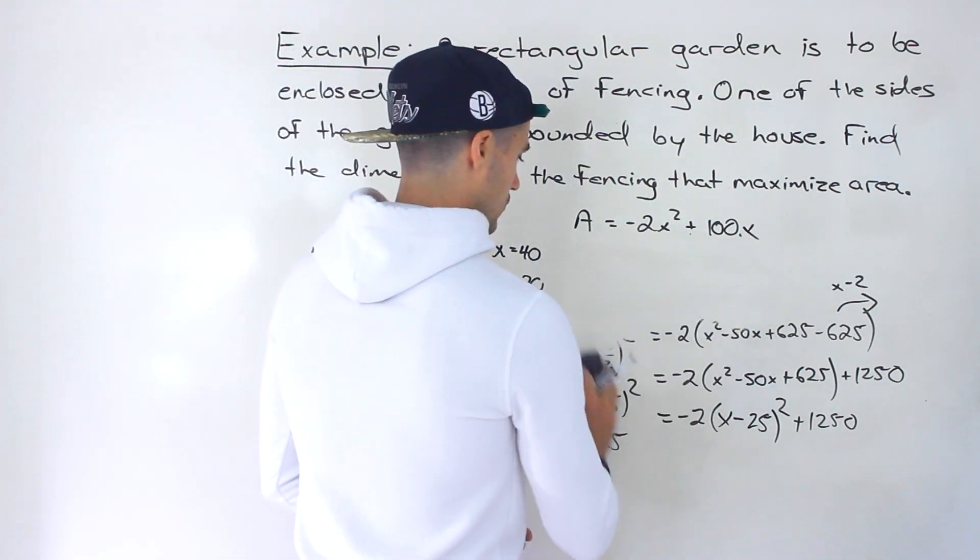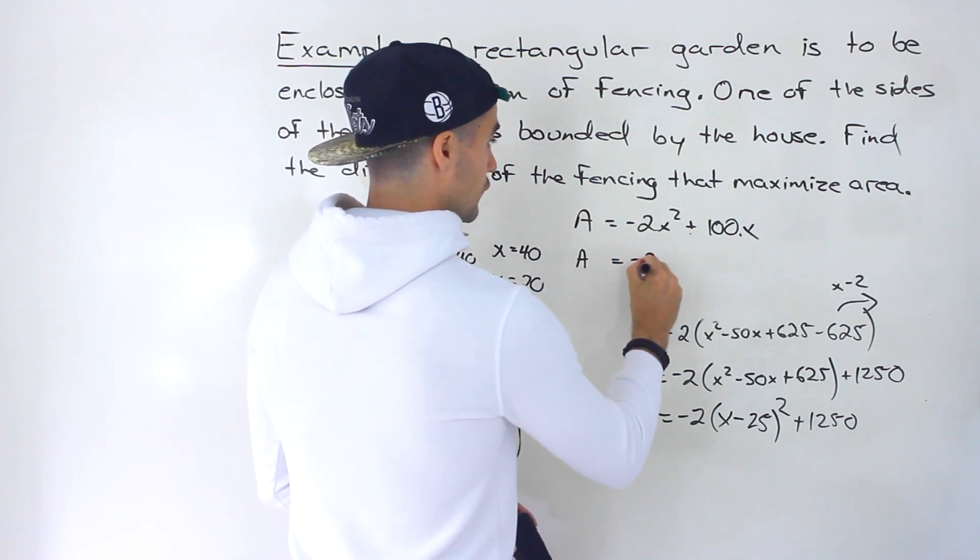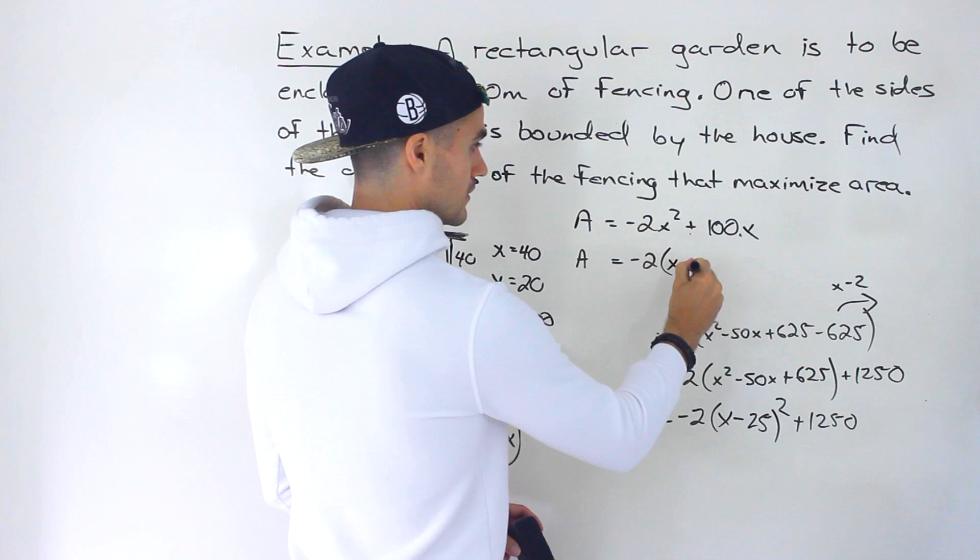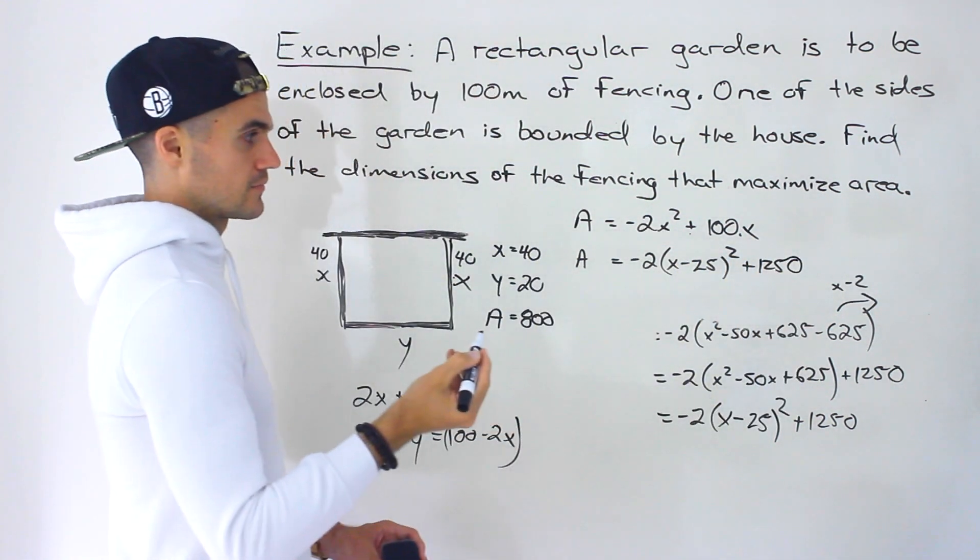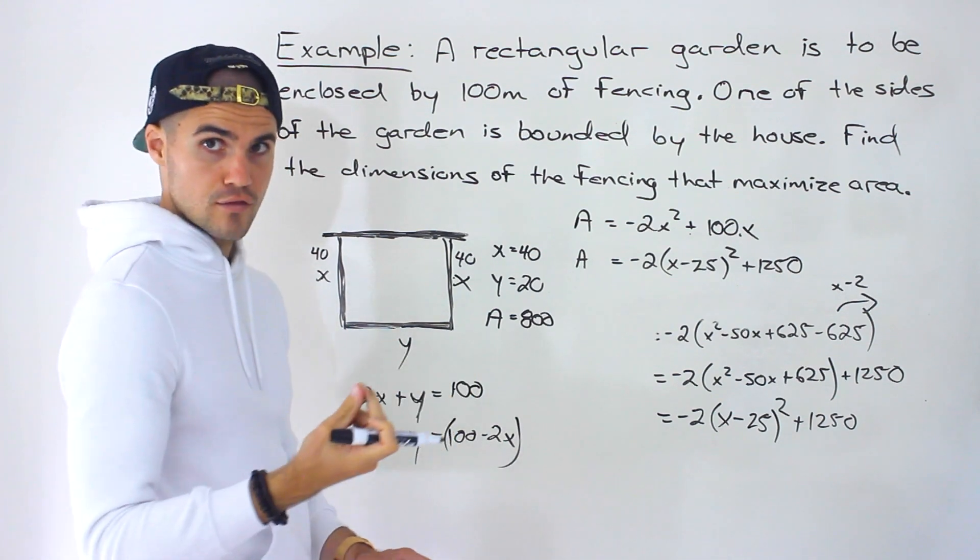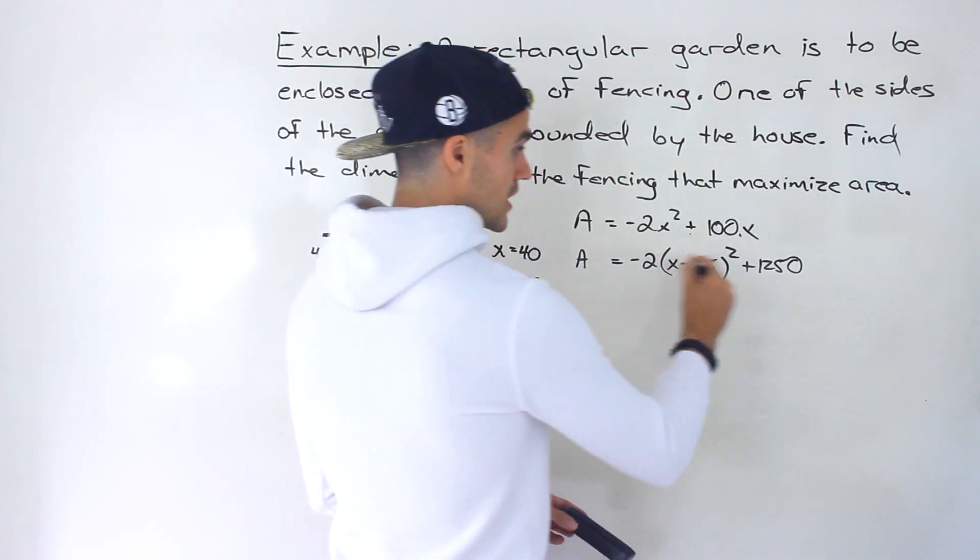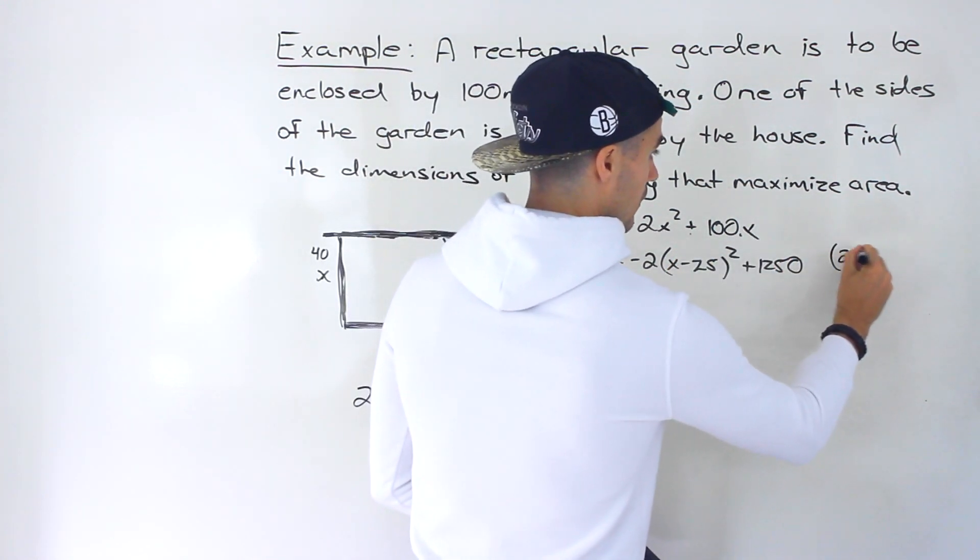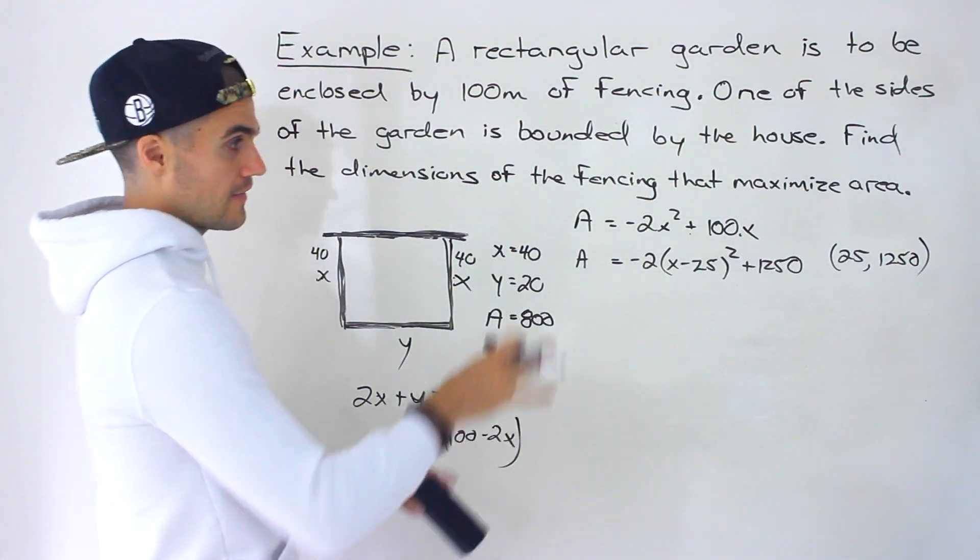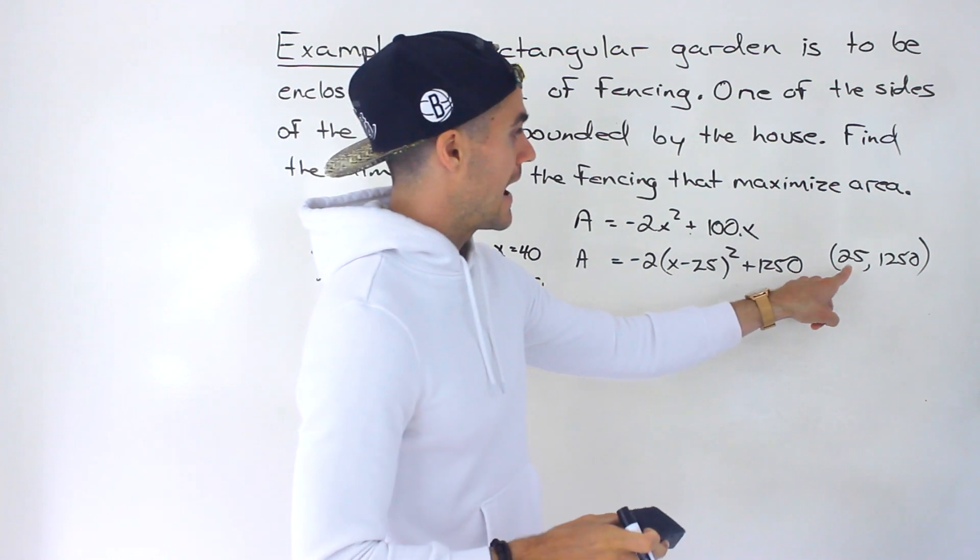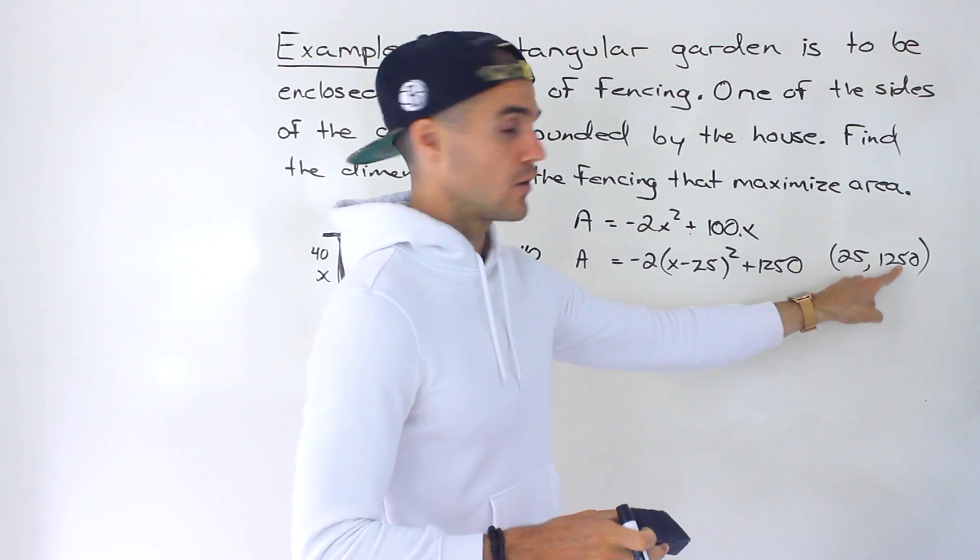So let me write that over here. The vertex form of this, the exact same quadratic ends up being that right there. And what's nice with the vertex form, we can get the coordinates of the vertex, which is going to be 25 and 1250 like that. And then we could test that. So what it's saying is that at an X value of 25, if X is 25, the area is going to be 1250.